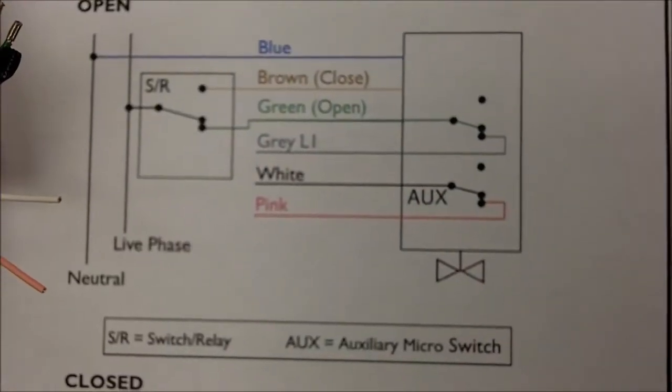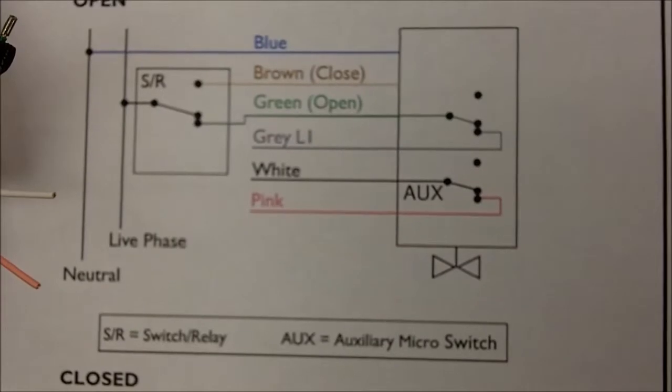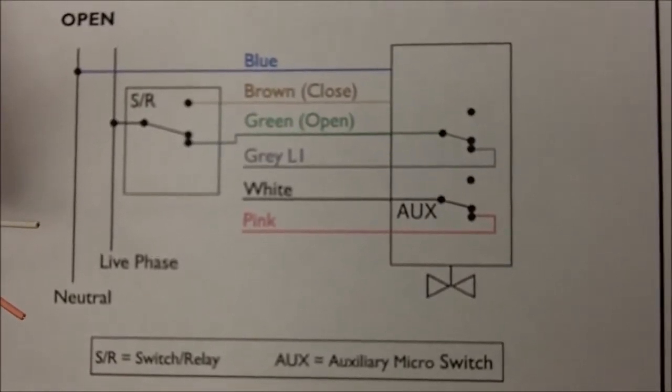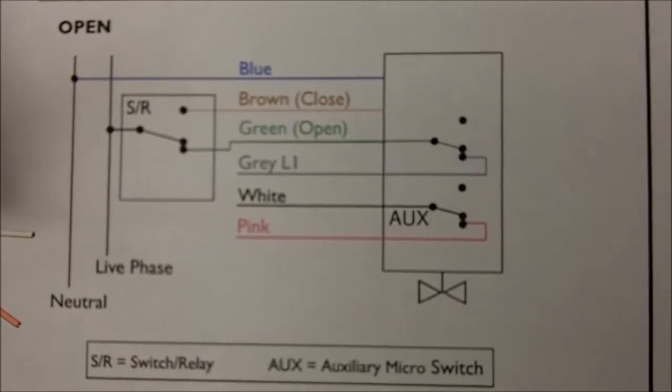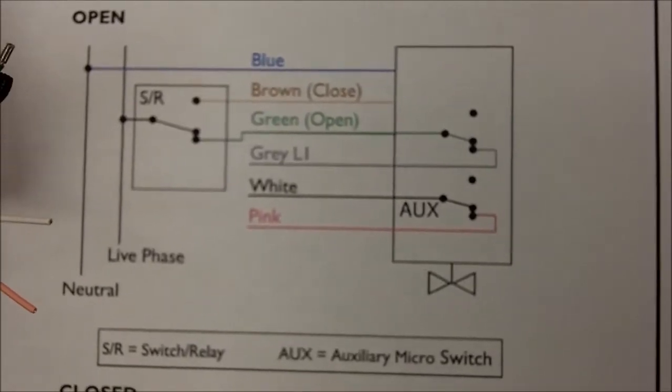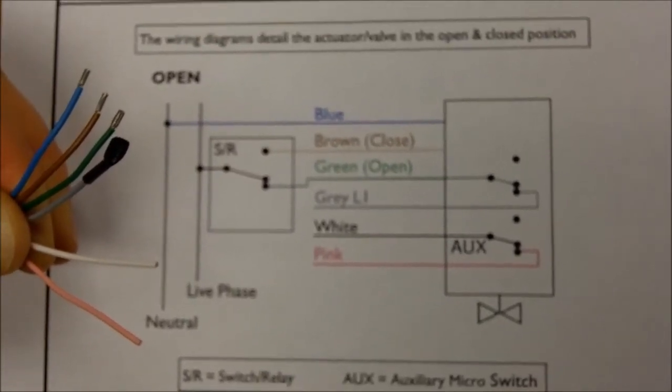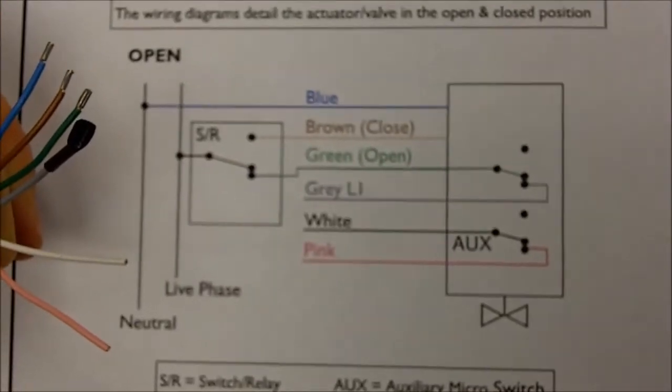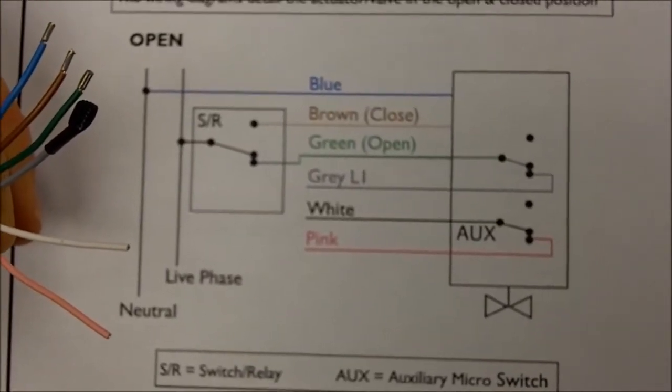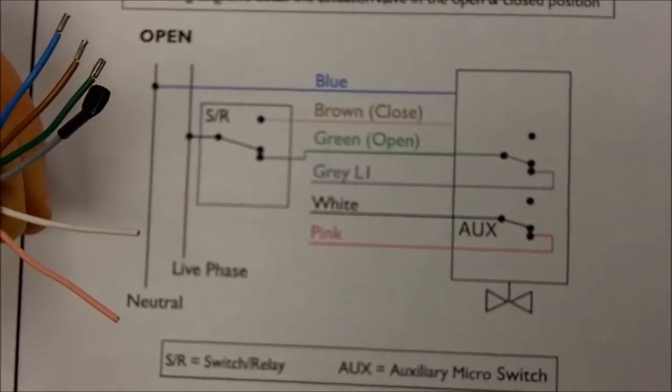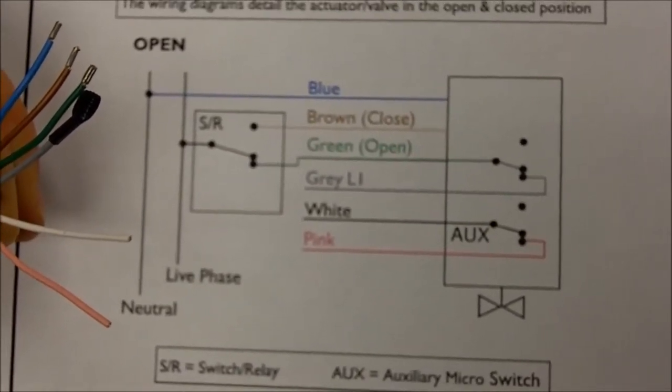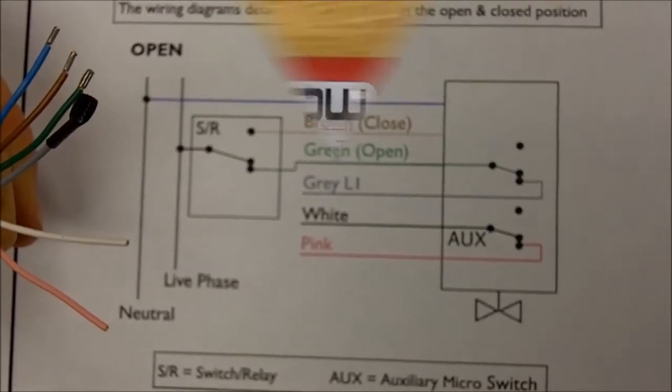For using the Synthese Pro in three-point control, the blue wire is the neutral and you switch your lives between brown and green. Brown being closed, green being open. The grey wire is the live feedback to your pump. White and pink are used for the auxiliary microswitch.